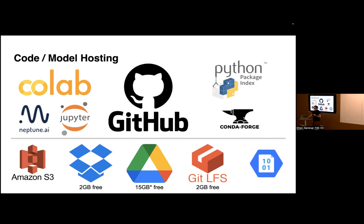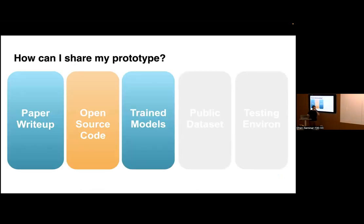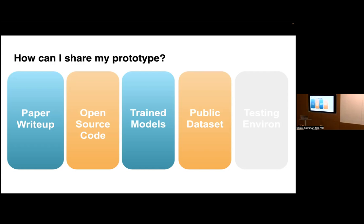Once you have trained models and open source code, the next question is what else can you provide to an external collaborator. You can provide the datasets you trained on — either the exact same dataset or a comparable public version. A lot of times people publish a pre-trained model but not the dataset. But if someone wants to completely replicate results from scratch, a pre-trained model only gets them the evaluation side — they won't be able to retrain their own models.